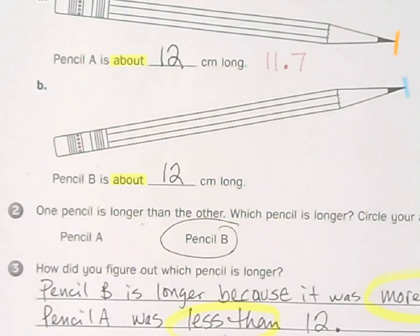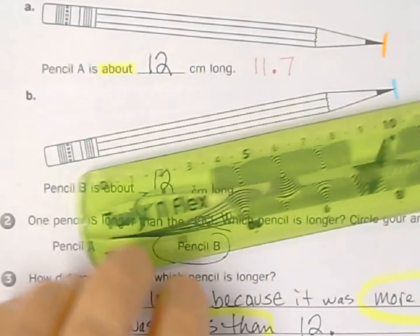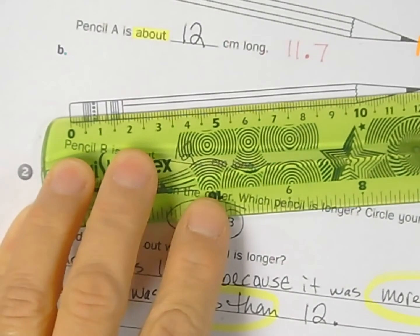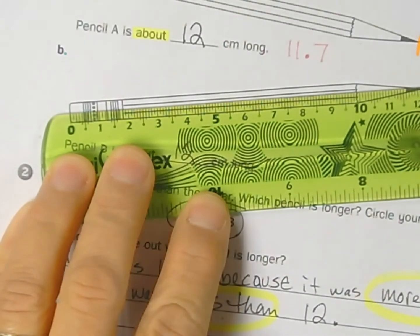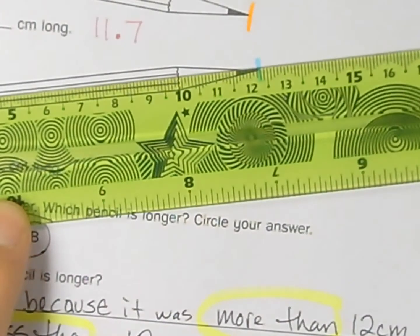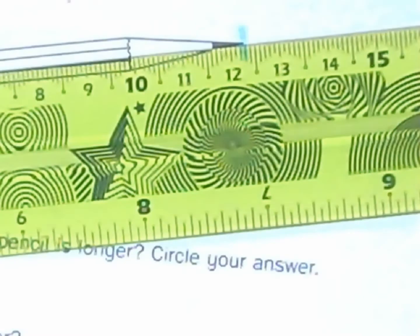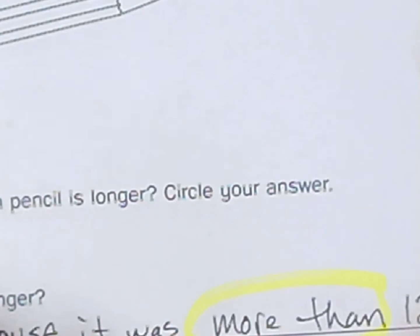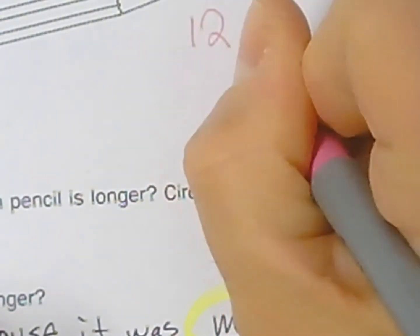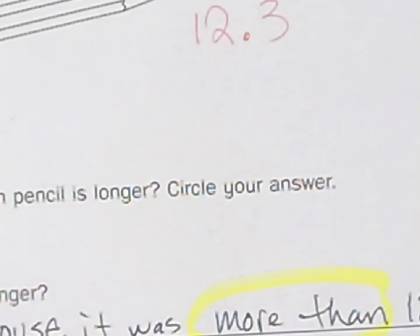Now the second ruler was a little longer than 12 so it's going to be 12 and some change. So when I zoom in again and I take a look, keeping the important part in the frame of the camera, I see that is one, two, three, and we'll call that 12.3. So more than 12 but less than 13.